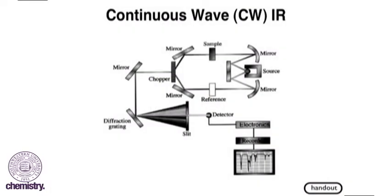First, in continuous wave, or CW-IR, what we are doing is continuously varying the wavelength of infrared radiation that we are using to sample the material that we're trying to analyze.